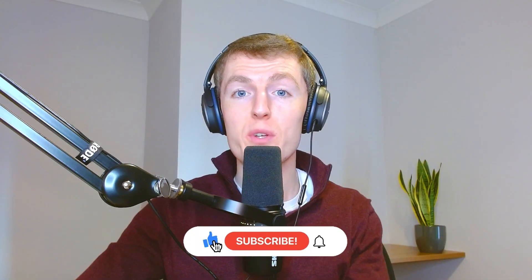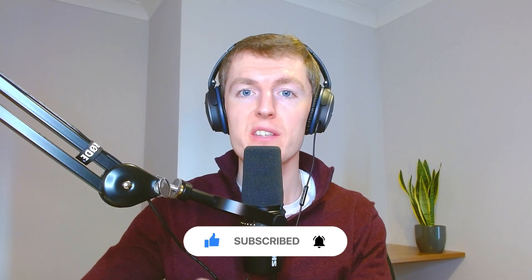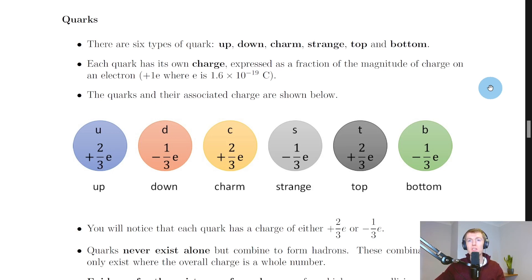Hey folks, how's it going? In this video we're going to look at quarks, so let's get started. We already saw in the theory video for the standard model that there are six types of quark, and it tells us them here again: up, down, charm, strange, top, and bottom.